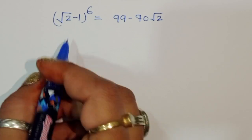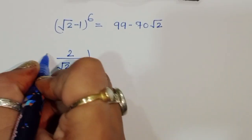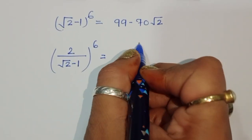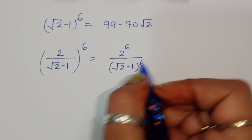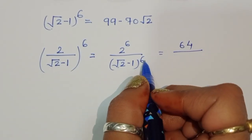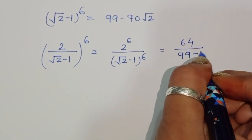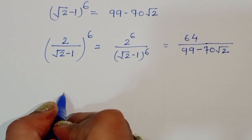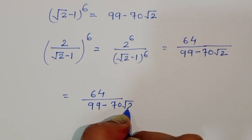The actual question is 2 divided by square root of 2 minus 1, to the power 6. This equals 2 to the power 6 divided by square root of 2 minus 1 to the power 6, which is 64 divided by 99 minus 70 square root of 2.